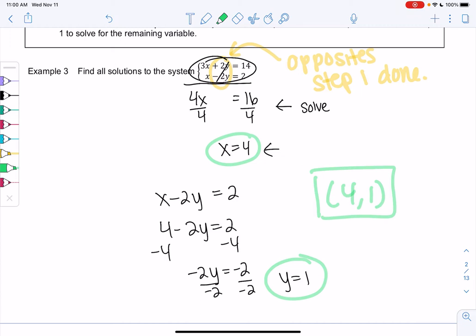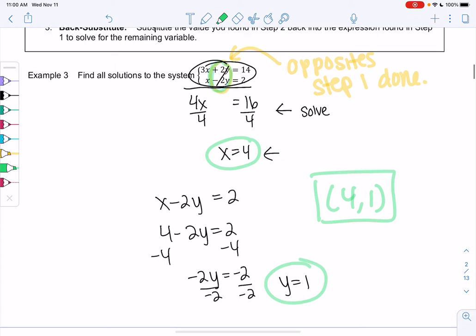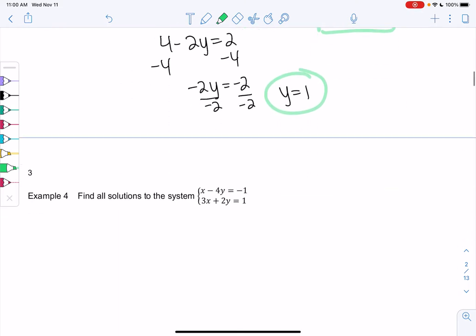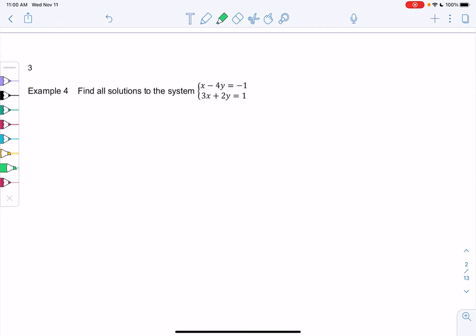So let's try an example where they're not opposites yet. So in example four, we want to find all solutions to x minus 4y equals negative 1, and 3x plus 2y equals 1. So notice I have no opposites yet, but we'll make opposites. So I could do 3x and negative 3x. I noticed that the y's, one's positive and one is negative already. So what I'm going to do is I'm going to multiply the second equation by 2.